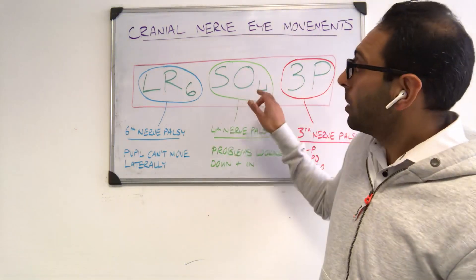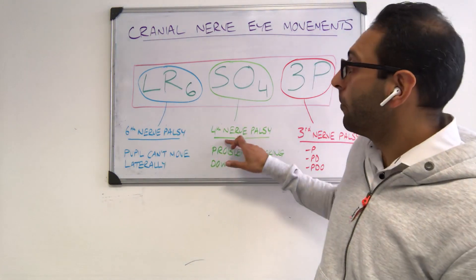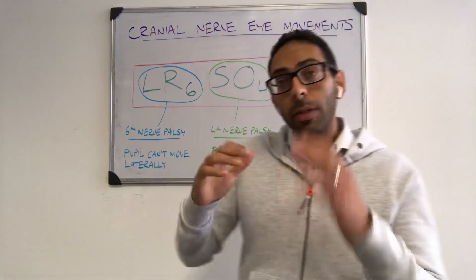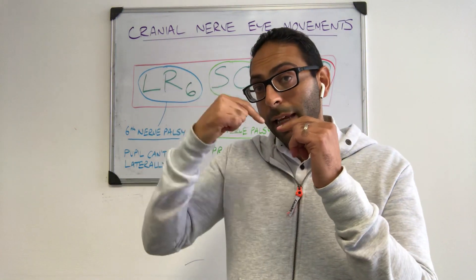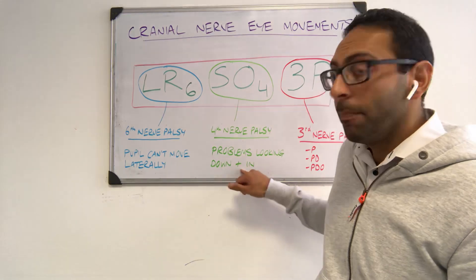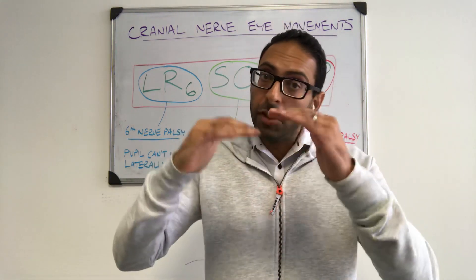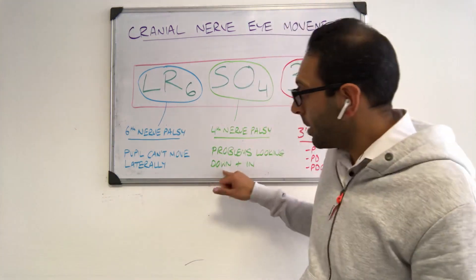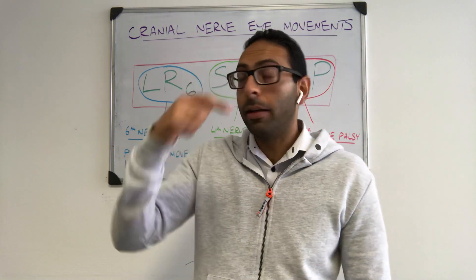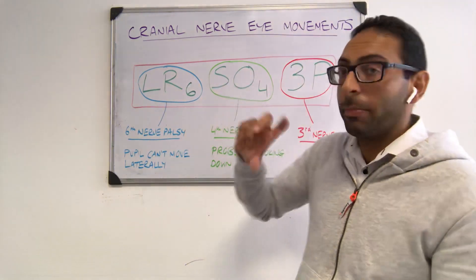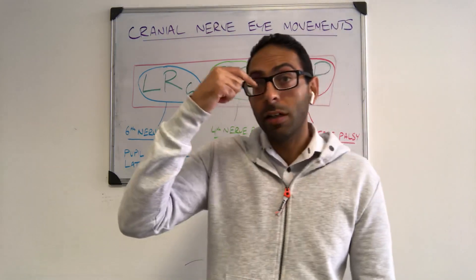The fourth nerve, or the trochlear, innervates the superior oblique muscle — SO4. Now if you get a fourth nerve palsy, they often present with diplopia, or double vision, because you're struggling to look down and in. You can't look down and in, and that's why you sometimes get head tilting, trying to get that vision aligned again. The way to remember down and in is if you're trying to look at your nose — nose is kind of OS backwards — that's how I remember the fourth nerve palsy: you can't look down and in because you can't see your nose.